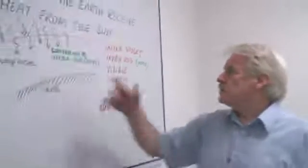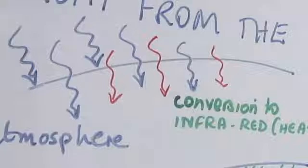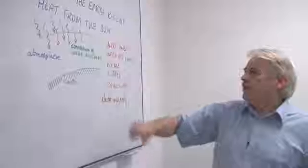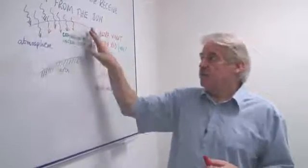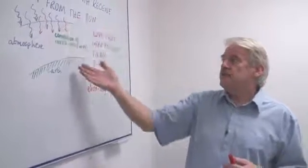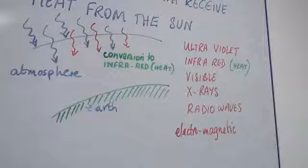Now, as these radiations impinge on the atmosphere above the earth, they can be absorbed by the atmosphere. And having absorbed them, the atmosphere then emits radiation as infrared.